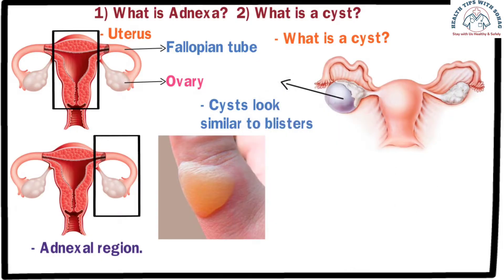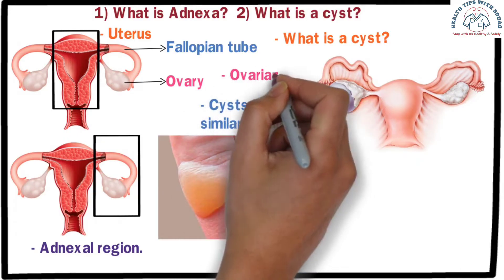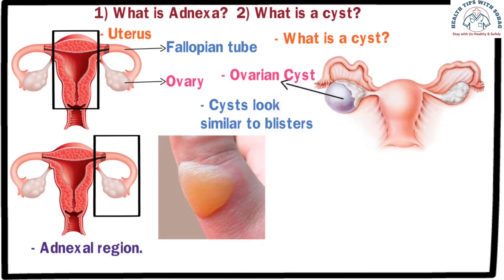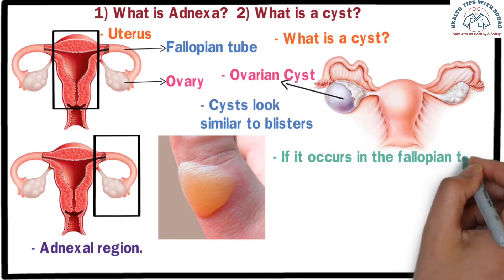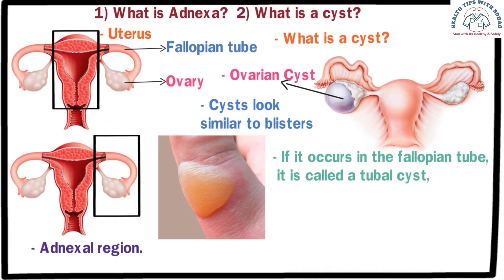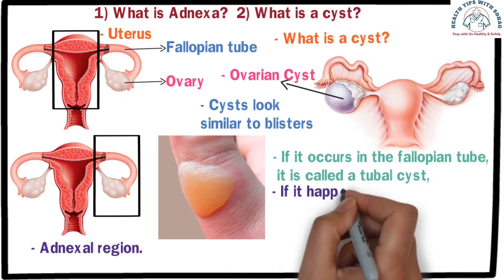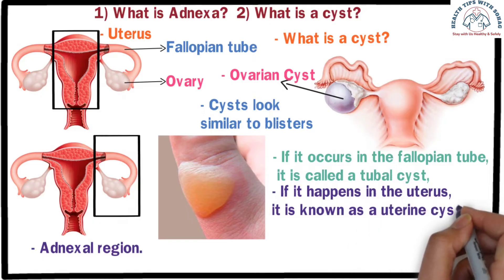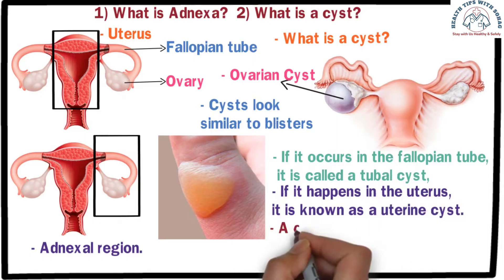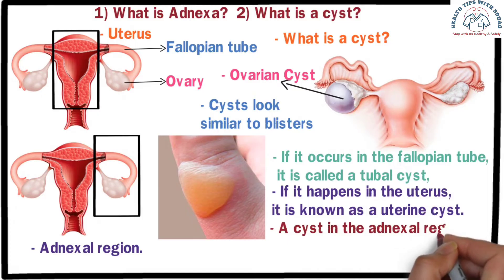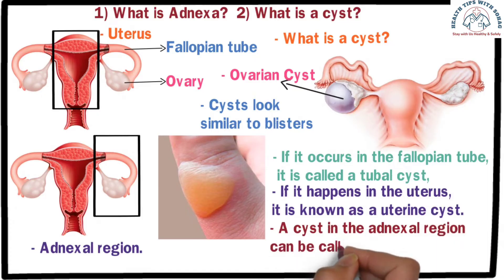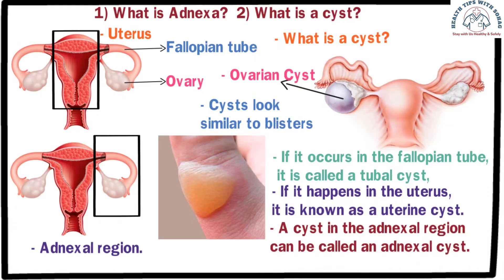Therefore, a cyst in the adnexal region is called an adnexal cyst. If a cyst forms in the ovary, it is called an ovarian cyst, or PCOD and PCOS. If it occurs in the fallopian tube, it is called a tubal cyst. If a cyst happens in the uterus, it is known as a uterine cyst. However, if the cyst is in the adnexal region and it cannot be clearly determined whether it is in the ovary or the tube, it is primarily referred to as an adnexal cyst.